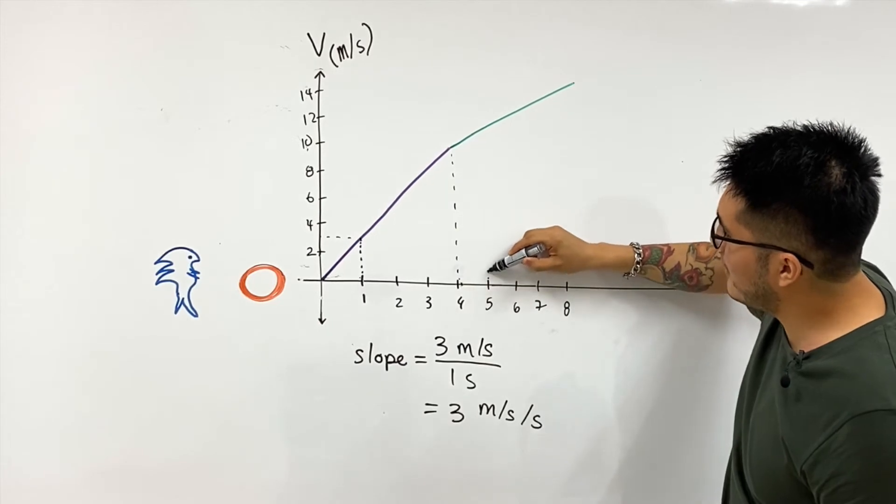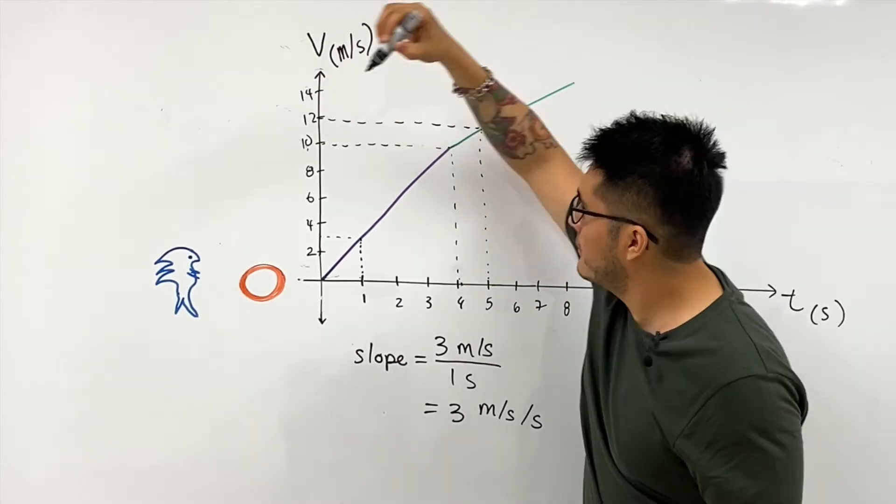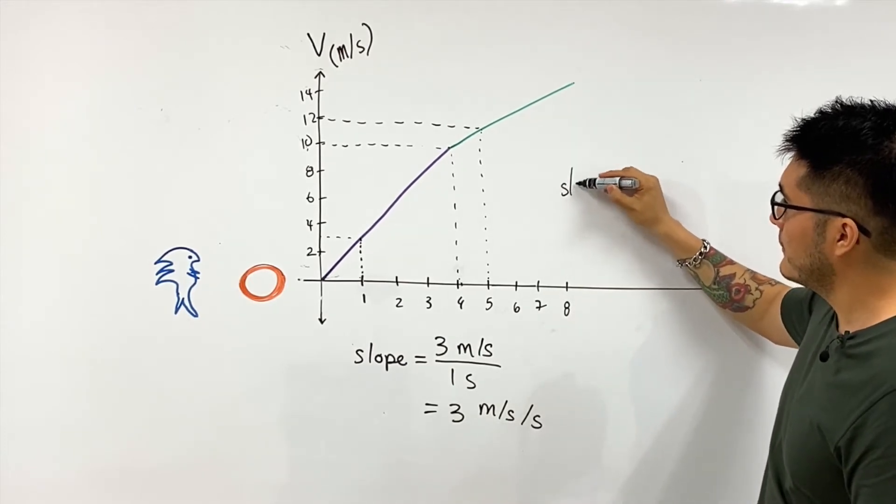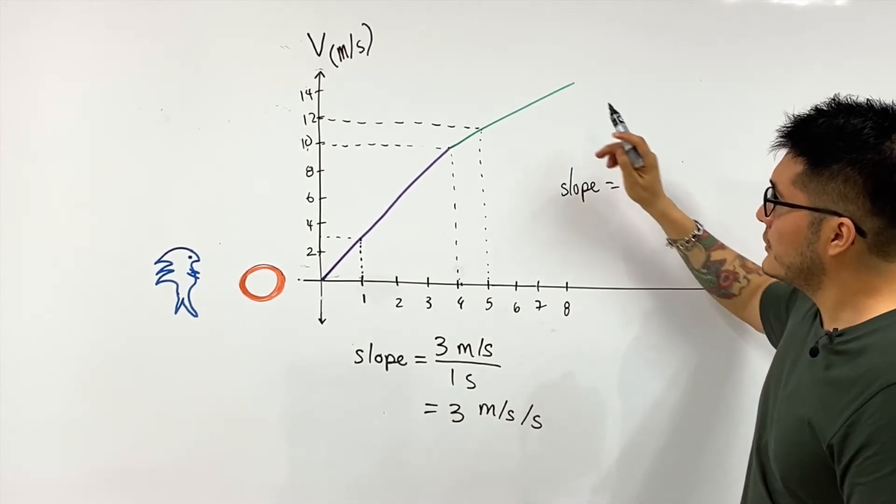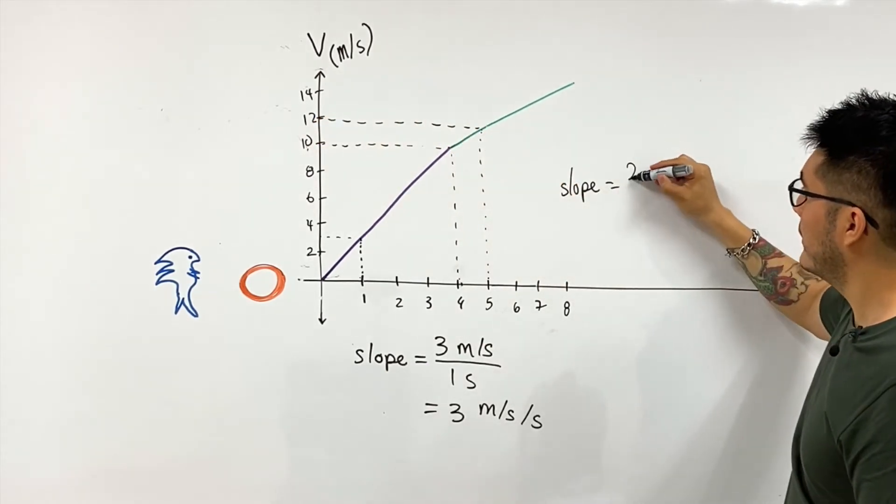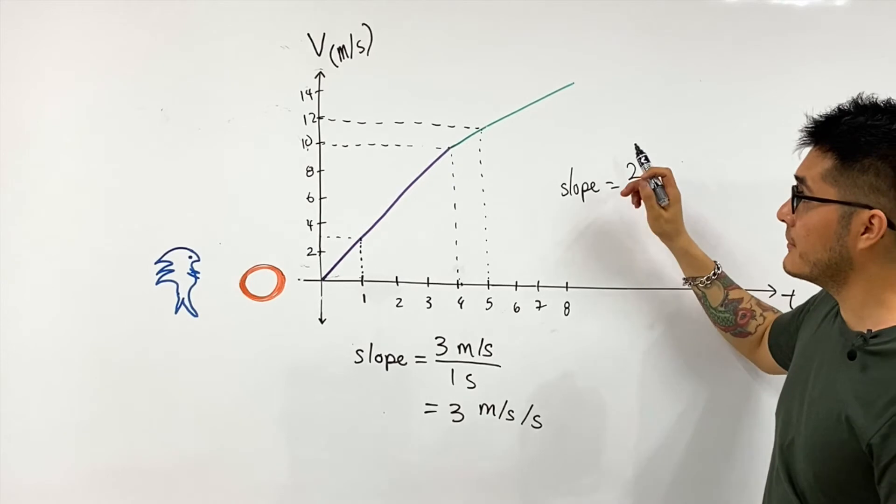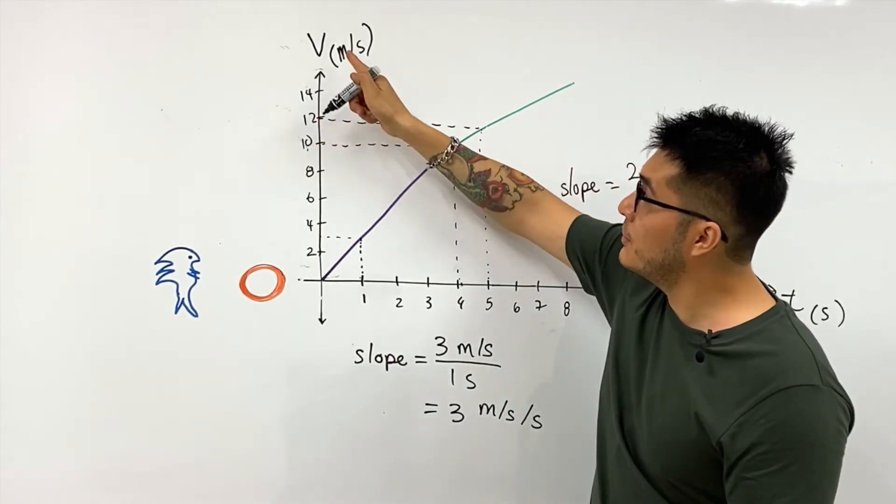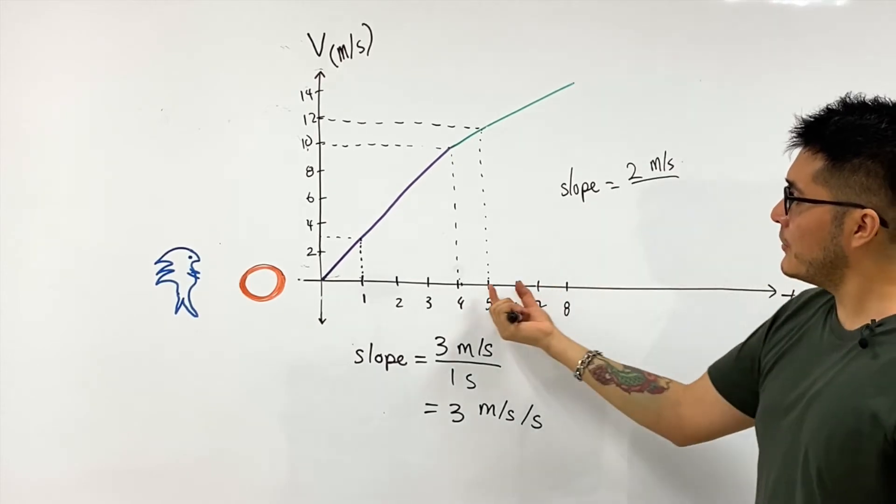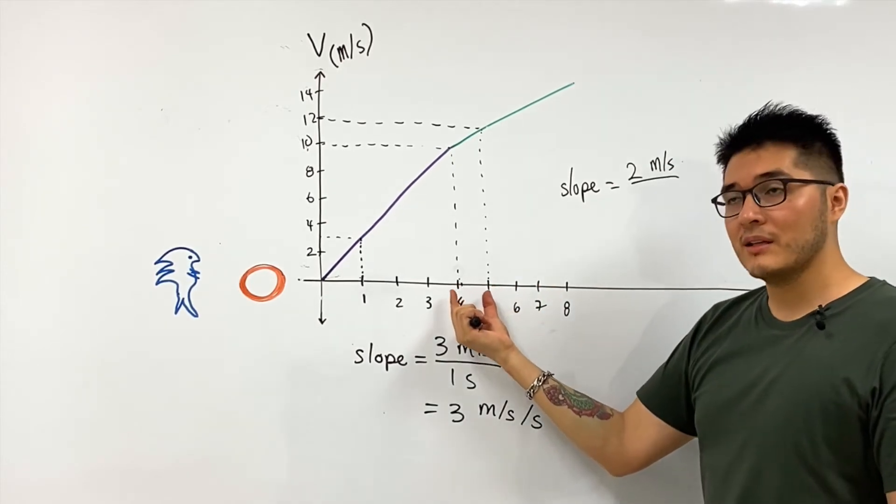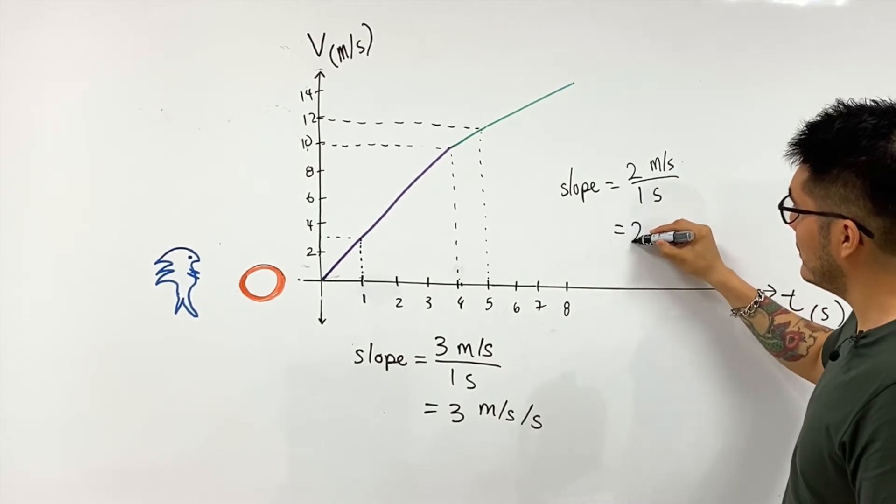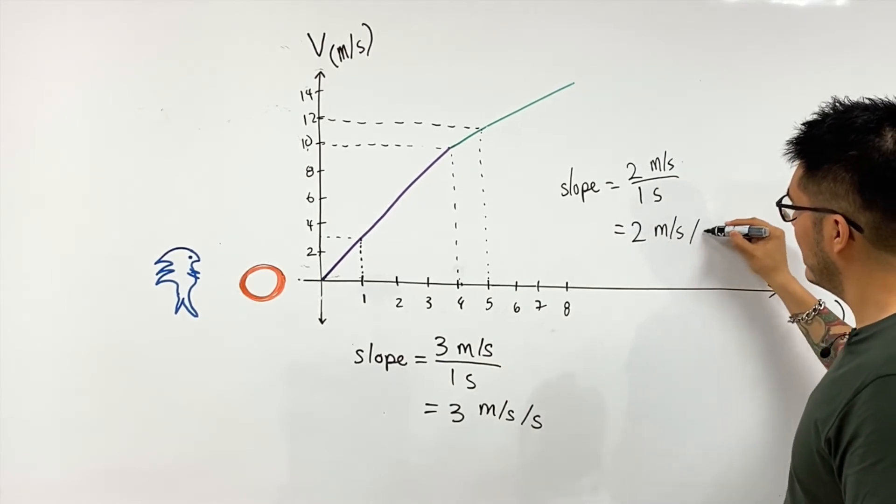So we're going to consider a time interval one second, so once again to calculate the slope we use the rise over the run. So the rise is going to be two meters per second because we're describing velocity, and the time interval, I cheated so I made it really easy for myself, it's going to be one second. So the slope will be two meters per second per second.